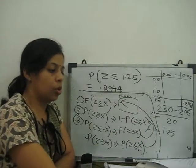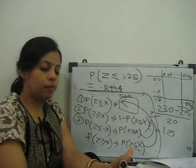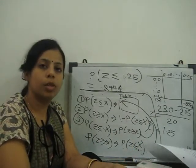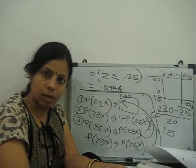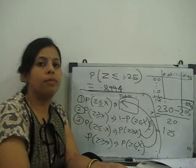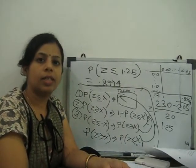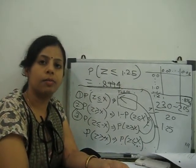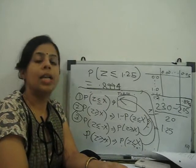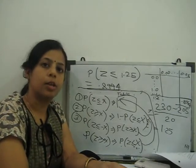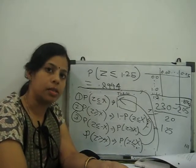With the standard normal distribution table we can find accurate values. With the 68, 95, and 99.7 rule we can only find approximate values. Thank you very much.